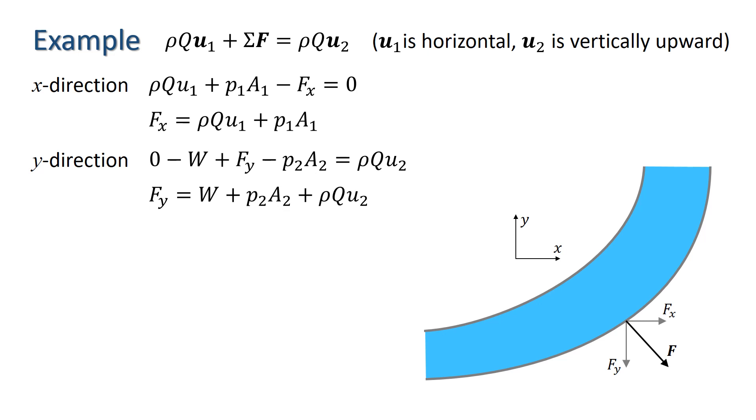Note that the force of the water on the bend is equal and opposite to the force of the bend on the water. So the force we are looking for is in the direction shown here. The magnitude of the force will be the square root of Fx squared plus Fy squared. And the direction of the force will be at an angle theta to the horizontal, where theta is simply the inverse tan of Fy over Fx, as shown here.